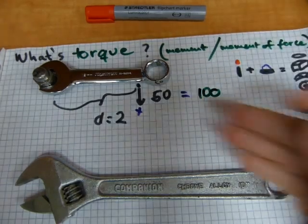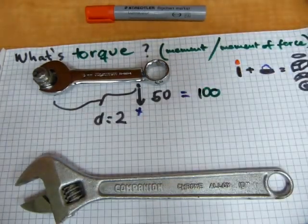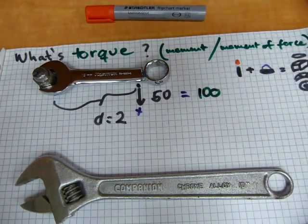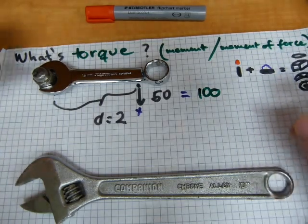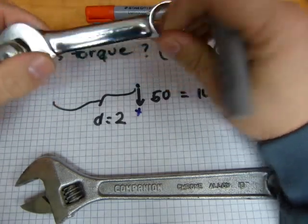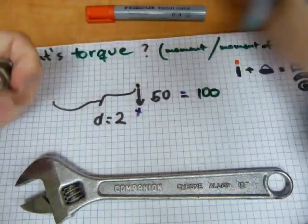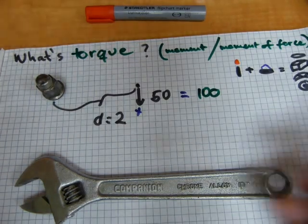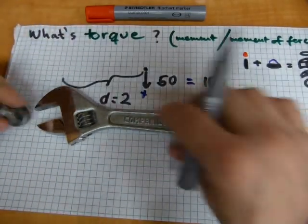100 units. You have 50 units of force, 2 units of leverage or distance, and you have 100 units of torque. Of course the lug nut is not even budging if that's the amount of torque you're generating. You need a bigger wrench.